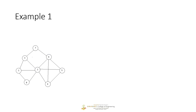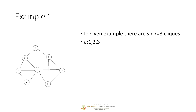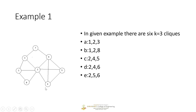Let's take another example. In this given network structure, how many cliques do we have with value k equal to 3? The first clique is 1-2-3, next is 1-2-8, then we have 2-4-5, then 2-4-6, then 2-5-6. We don't have 3-7-6 as a clique because there is no connection between nodes 3 and 6. So we have 6 cliques in this network structure.